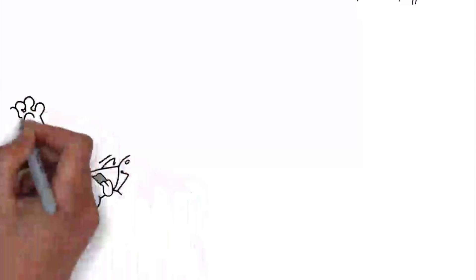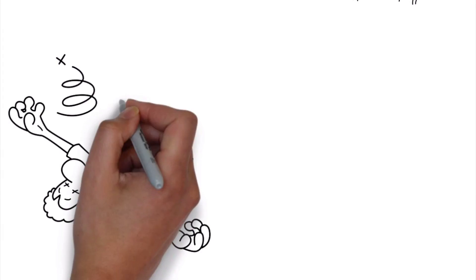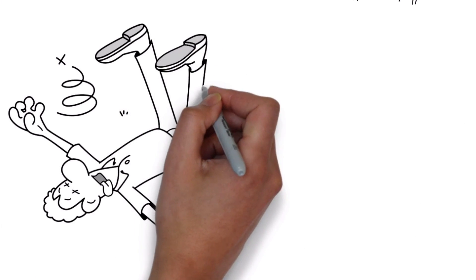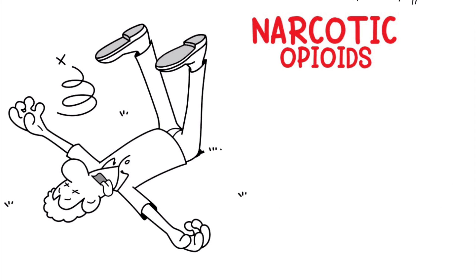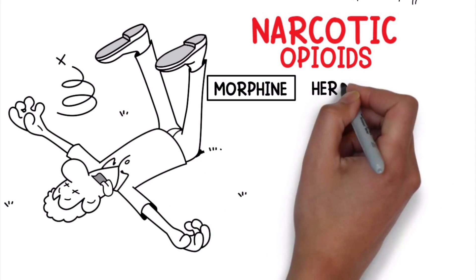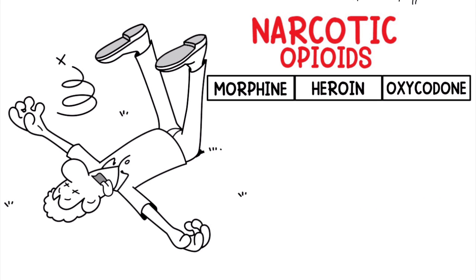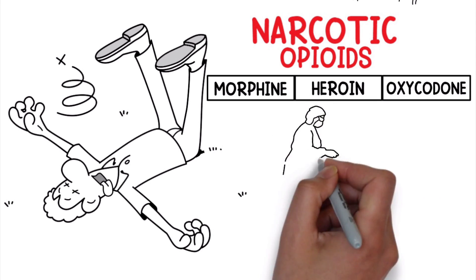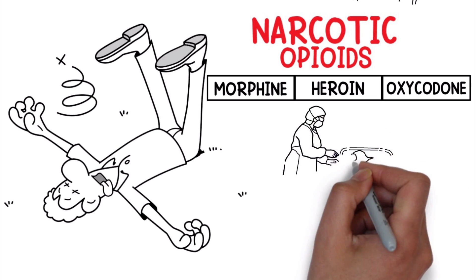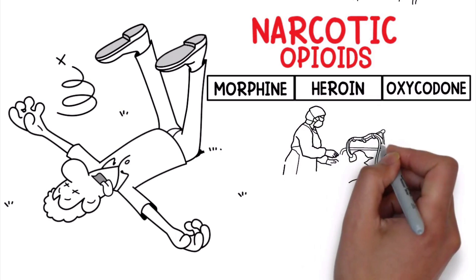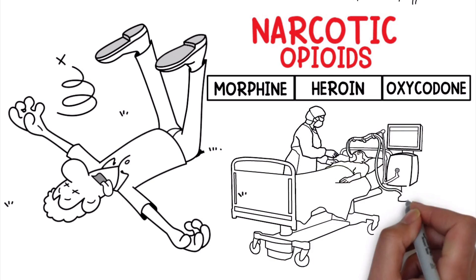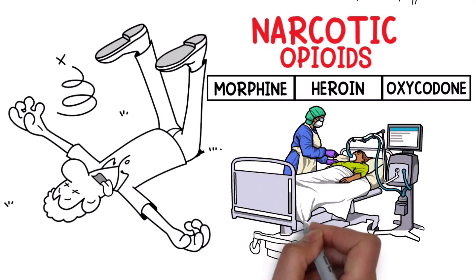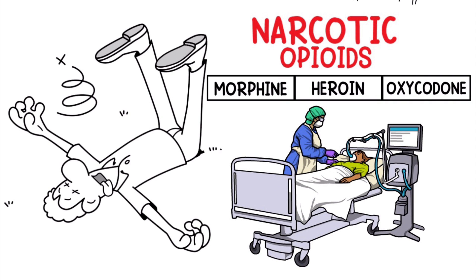One of the major pharmaceuticals that cause a majority of drug overdose deaths is narcotic opioids. Some examples include morphine, heroin, and oxycodone. A narcotic overdose is a very serious situation because it causes apnea and respiratory depression, which may result in the need for intubation and mechanical ventilation.